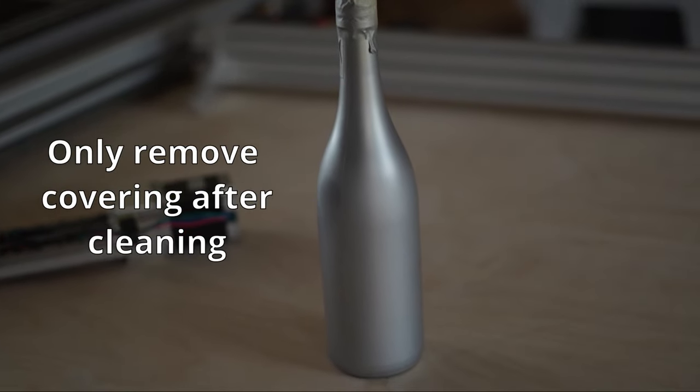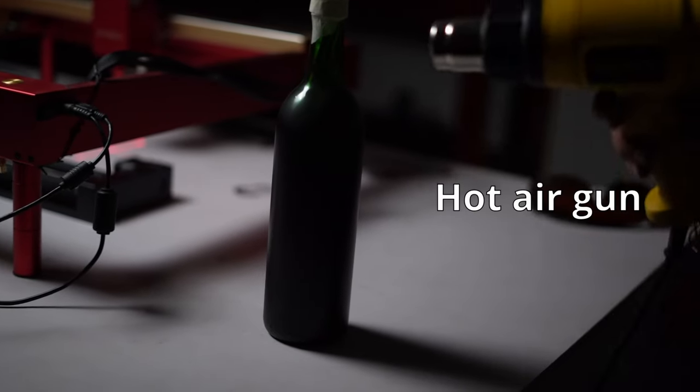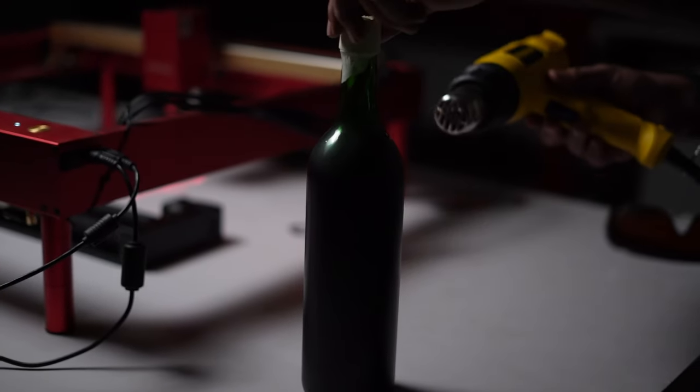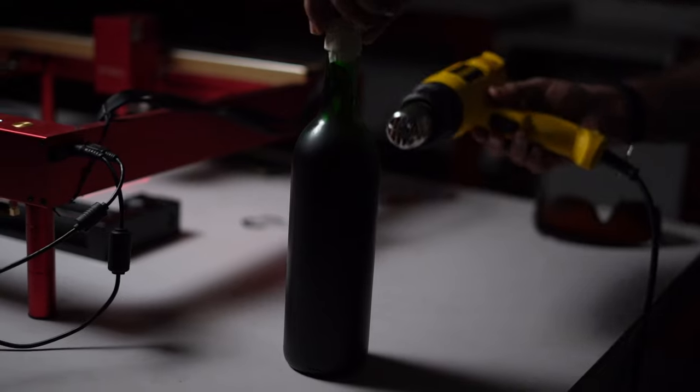Now, once you have the bottle painted, let it dry naturally. You can use a hot air gun if you are in a hurry. Just make sure you don't overheat the bottle and paint. Also make sure you use the bottle soon after it dries. Leaving it out for too long can mess with your engraving.